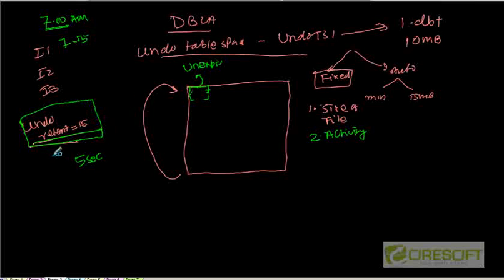So undo retention is going to give me when my undo will be expired. After it expires, then we can overwrite.